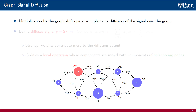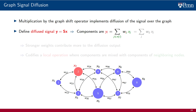Multiplication of a graph signal by a shift operator implements a diffusion of the signal over the graph. More formally, define a diffused signal Y as the product of the graph shift operator with a given graph signal X. Because of the sparsity pattern of S, the i-th component of the diffused signal, which we denote by Yi, is affected only by the components Xj for j in the neighborhood N of i. These are the values of the input signal X that are supported on adjacent nodes j that belong to the neighborhood of i.